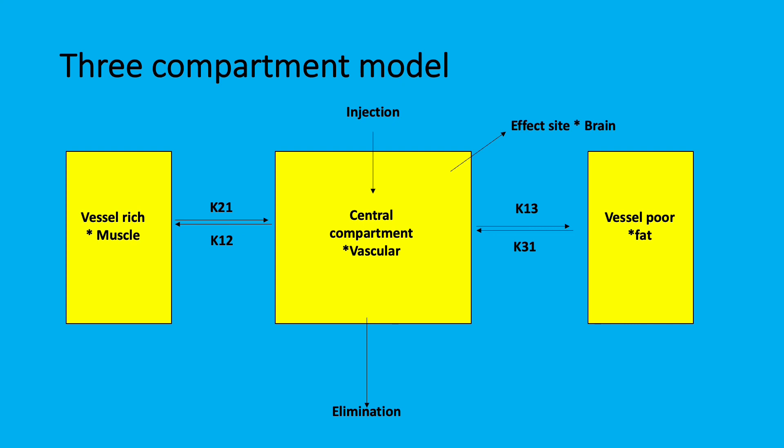And as there's ongoing elimination from the central compartment, for example, if the drug's turned off, the concentration in the central compartment will decrease. And then there will be redistribution back from the vessel rich and vessel poor compartments at specific rates, i.e., rate constants, causing elimination of the drug over a period of time.